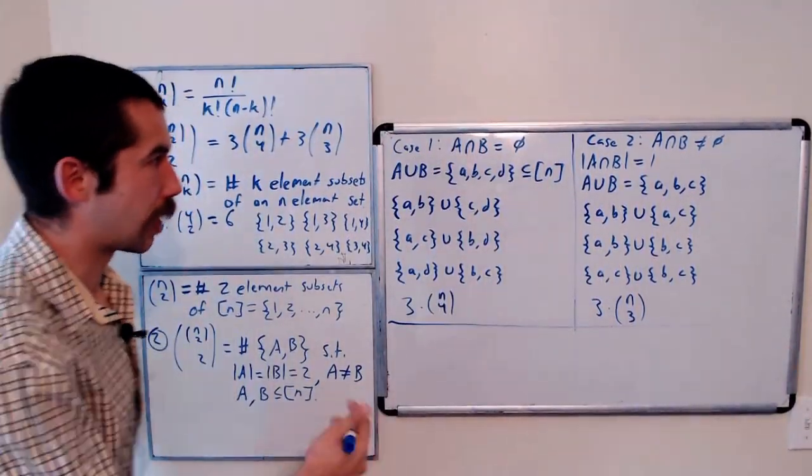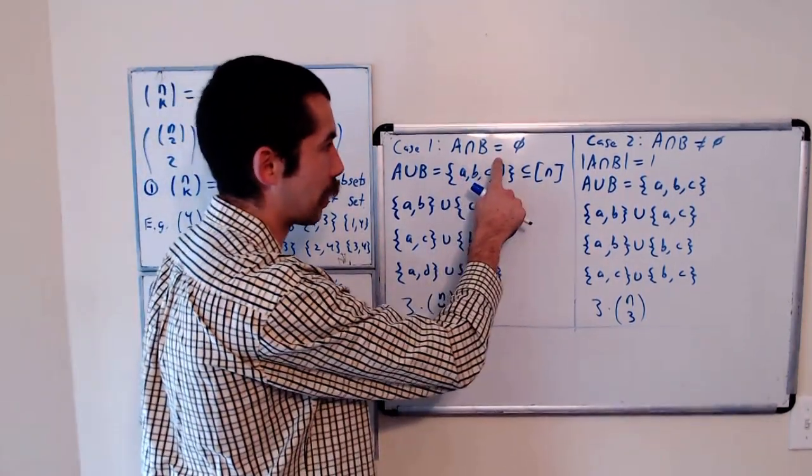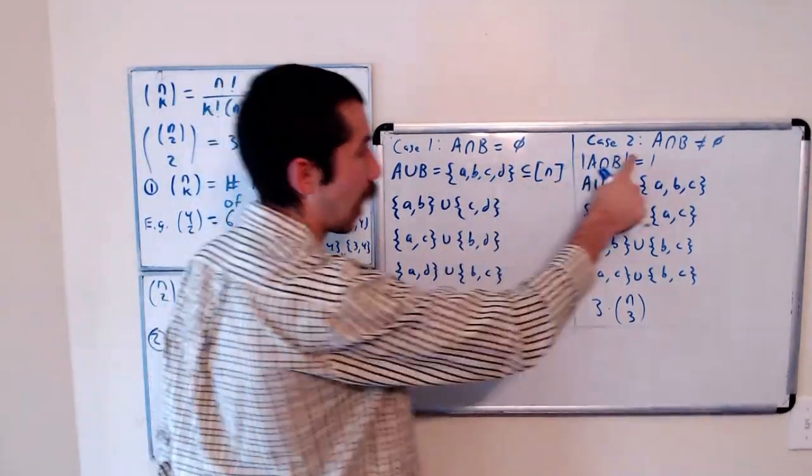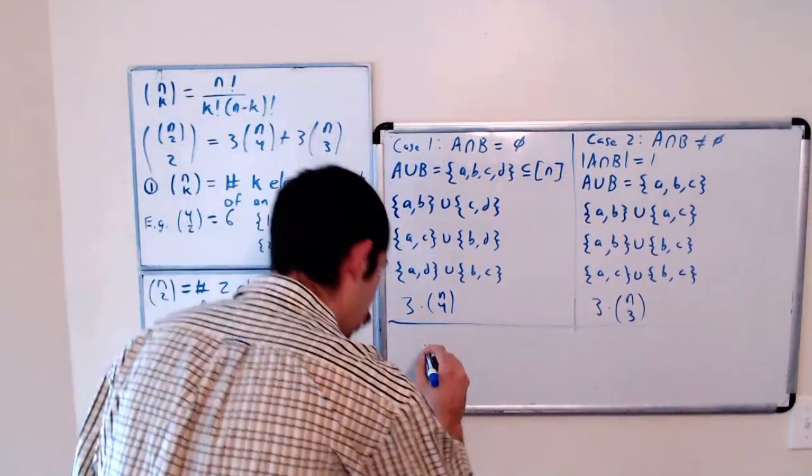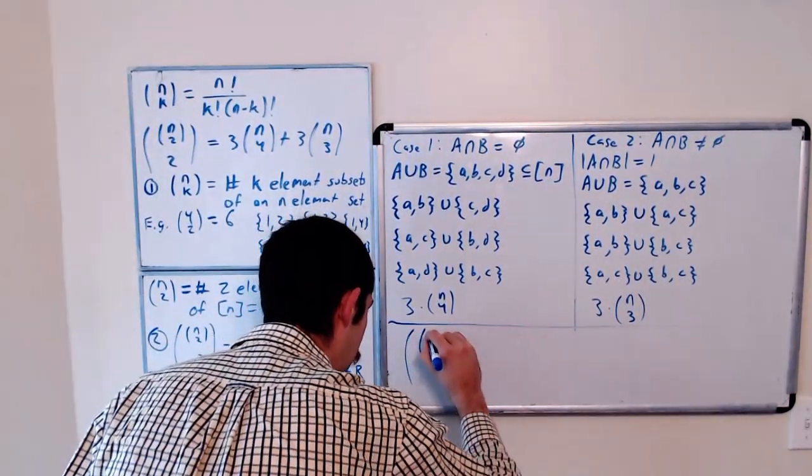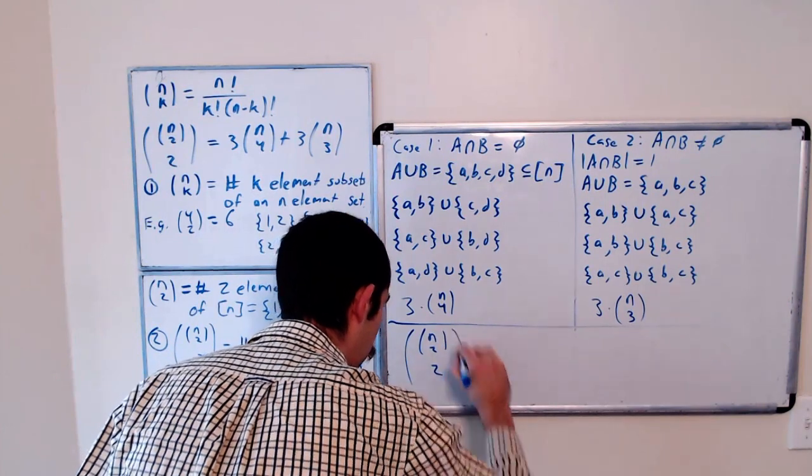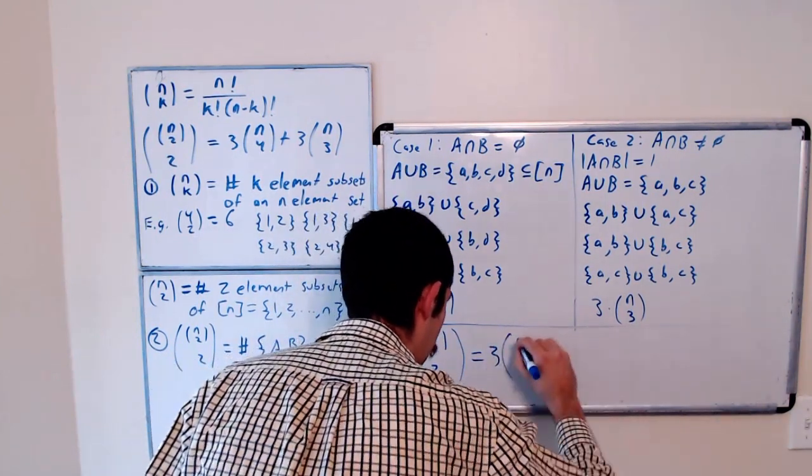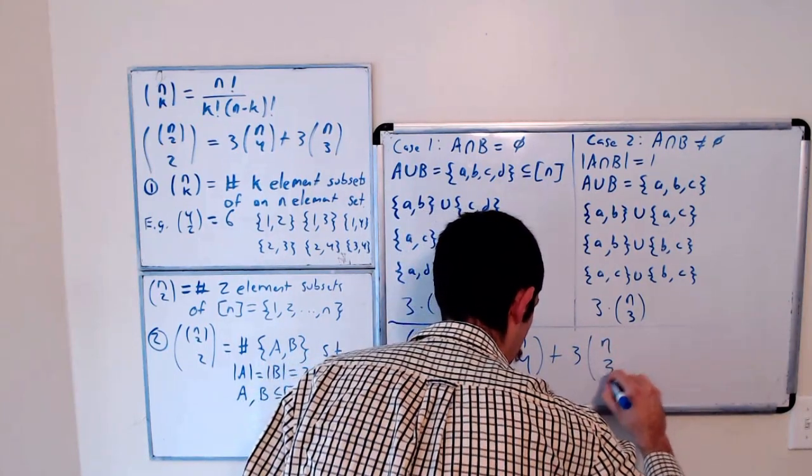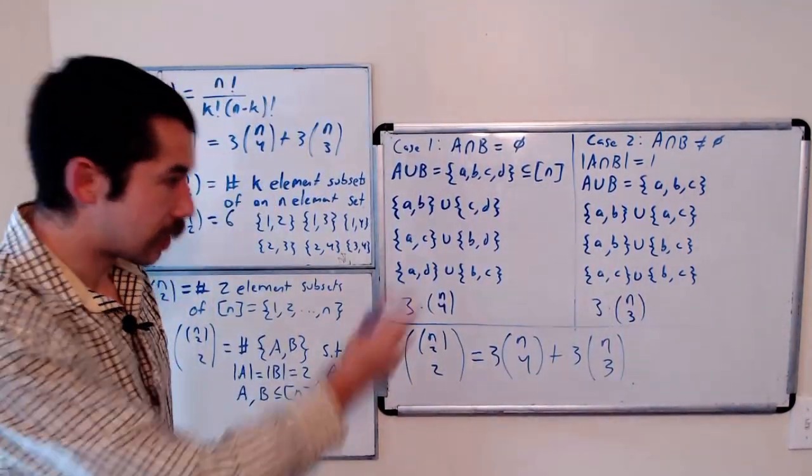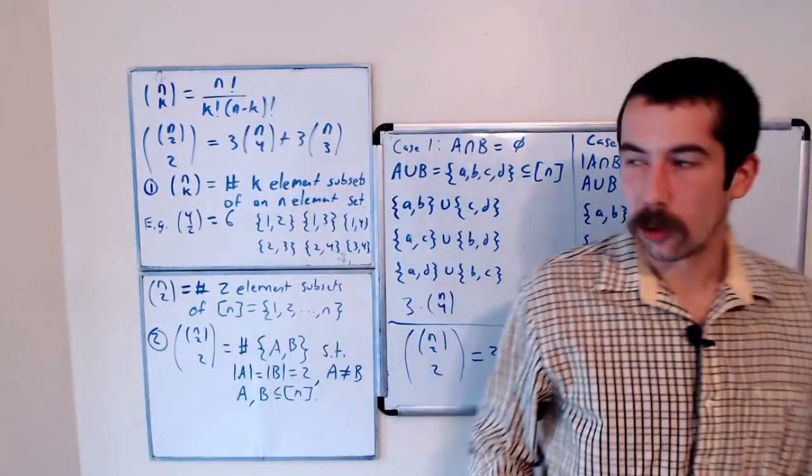And then you just have to ask yourself, are you convinced that these two cases are disjoint? Well, it can't be the case that a intersect b is empty and a intersect b is not empty. So they are disjoint. So we have just shown that n choose 2 choose 2 is equal to 3 times n choose 4 plus 3 times n choose 3. And that's it. So this is how you do a combinatorial proof.